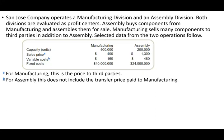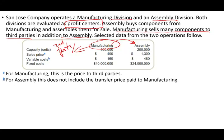San Jose Company operates a manufacturing division and an assembly division. Both divisions are evaluated as profit centers. Assembly buys components from manufacturing and assembles them for sale. Manufacturing also sells many components to third parties in addition to the assembly division.